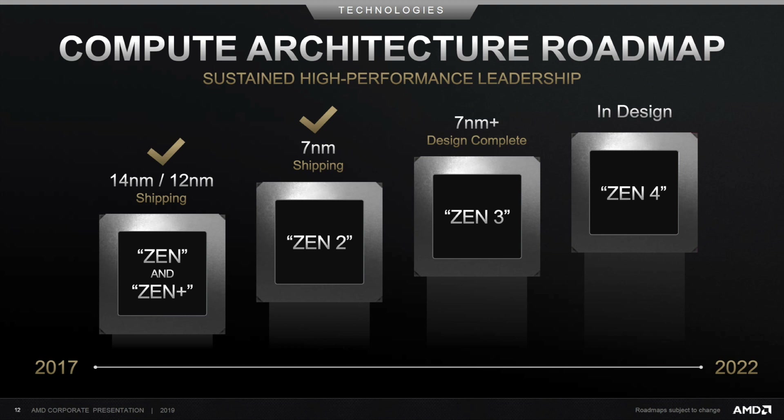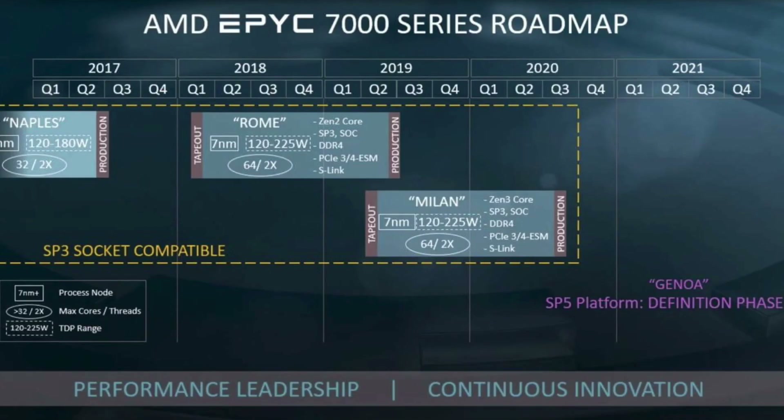Zen 2 has been shipping for a few months. Zen 3 is complete, and if AMD stays on a yearly cadence, that means Zen 3 should be released mid-2020. It takes a year or so to test a processor. Here's a more detailed roadmap focusing on EPYC, the server version of Zen. This shows Milan, based on the Zen 3 core in Q3 2020.